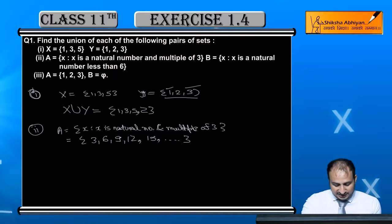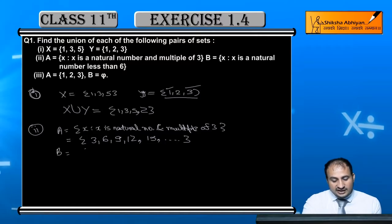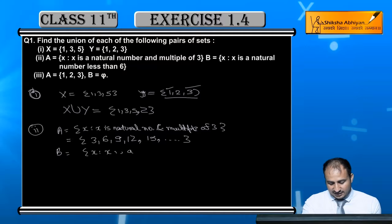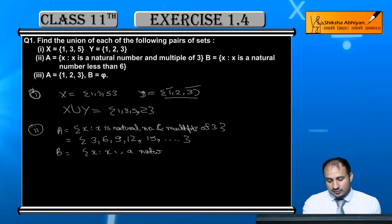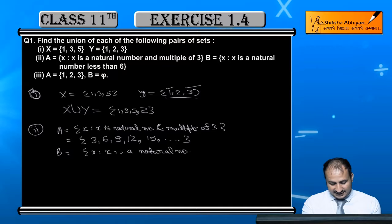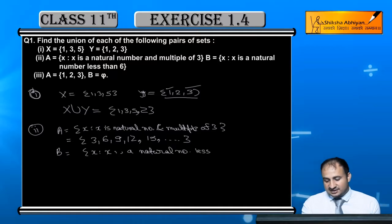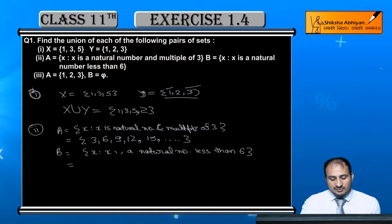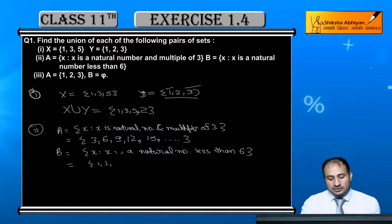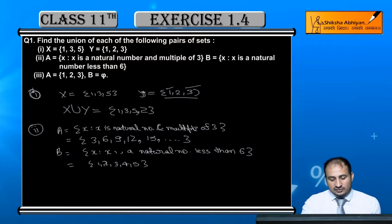Then we find the union of A with Set B, where B is defined as x where x is a natural number less than 6. So the elements of B are {1, 2, 3, 4, 5}.